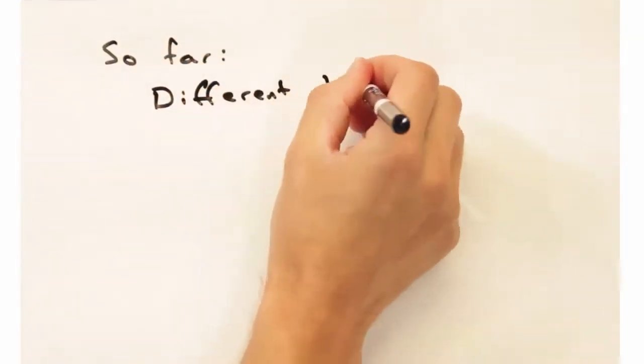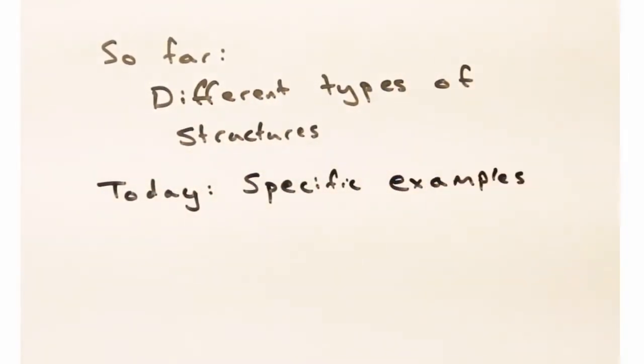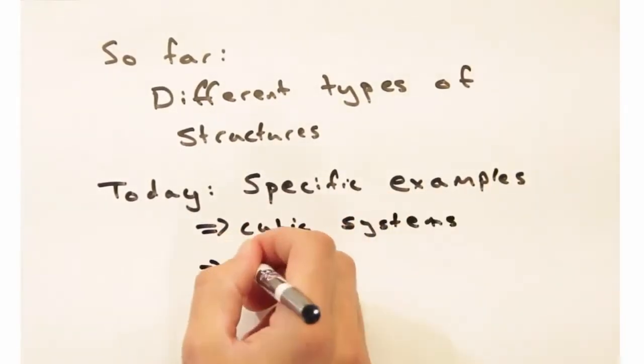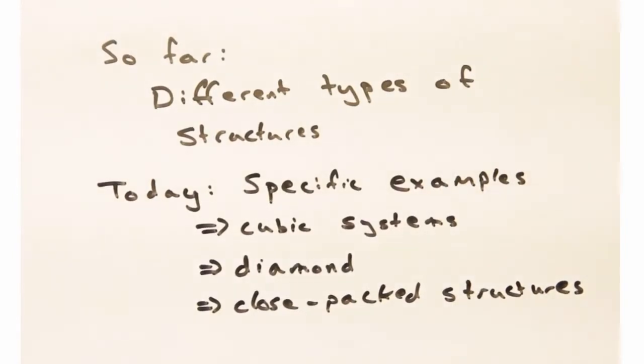So far we've talked about different types of structures, but today we want to look at specific examples that are important in solid state physics. We'll start by looking at different cubic systems, transition into diamond, and finish with a discussion on close-packed structures.